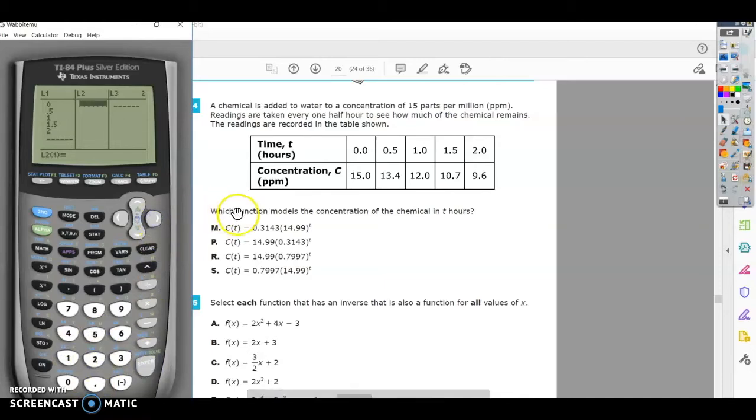Then I'm going to put my concentration values in the next column. I'm going to put 15, 13.4, 12, 10.7, and 9.6, all the way to the end. Anytime you use your calculator to write an equation, you have to make sure the same number of values are in each column. Make sure you've typed them in correctly. If something's typed incorrectly, it's not going to give you the correct equation.